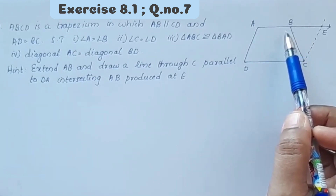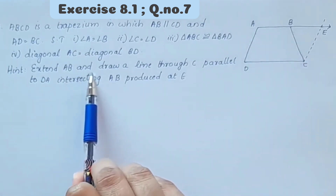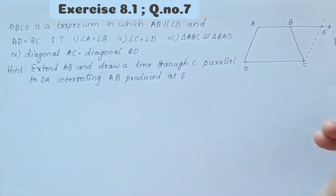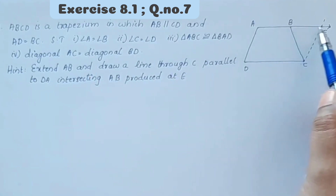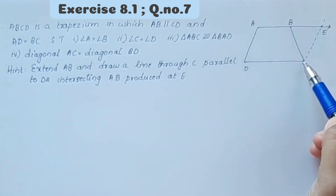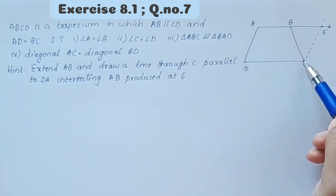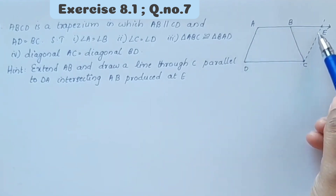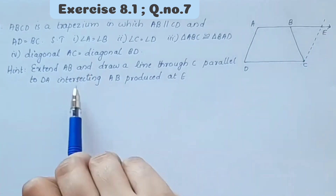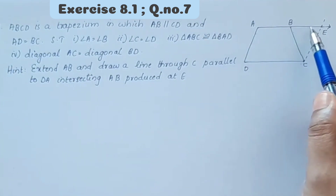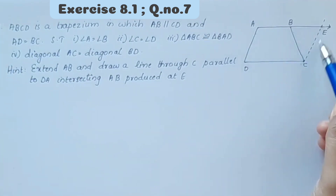Here we have a hint: extend AB and draw a line through C parallel to DA, intersecting AB produced at point E.